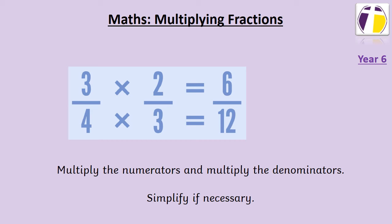We can then simplify our answer by finding the highest common factor of these two parts of the fraction. The highest common factor between 6 and 12 is 6, so we can divide both parts of the fraction by 6 to know that 6 twelfths is the same as a half.